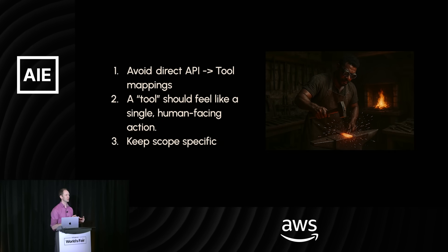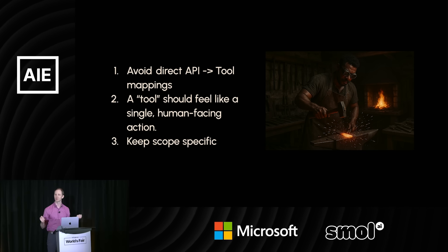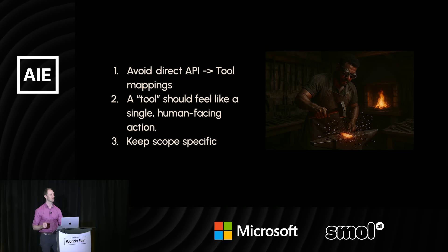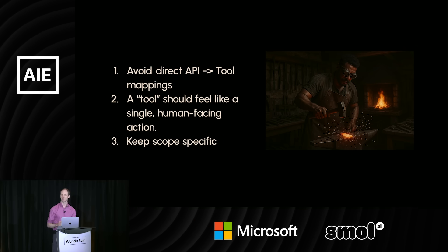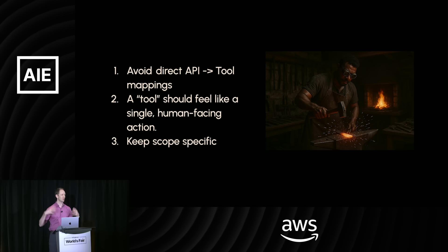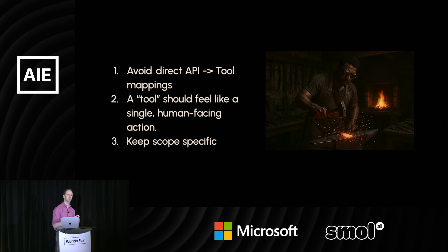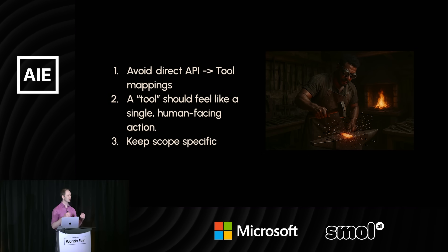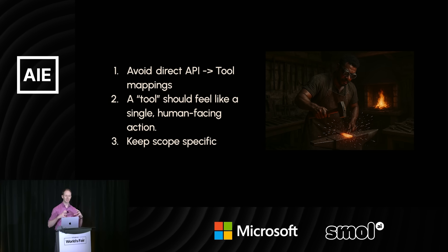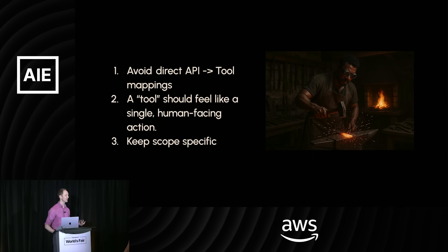A really common fallacy when designing tools is thinking there's a one-to-one mapping between your APIs and your tools. If you're working in an organization that has 300 APIs, please do not register 300 tools with your agent — it will get really confused. Empirically, the more tools you expose to an individual prompt or completion call, the less accuracy you see overall, due to more semantic collision between tools. Reduce the number of tools exposed at a single time, group them together in logical ways, keep the scope specific with clear names and descriptions, and each tool should feel like a single human-facing action.